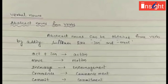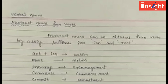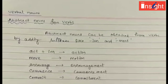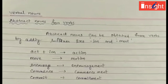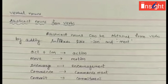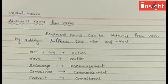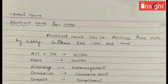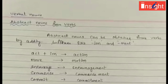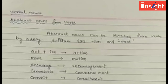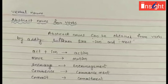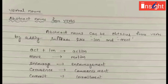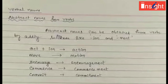The next type is verbal noun — abstract nouns formed from verbs using suffixes like -ion, -ment, and -ure. Examples: act → action, move → motion, encourage → encouragement, commence → commencement, commit → commitment. These are all types of abstract nouns.